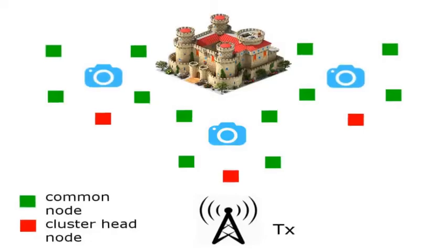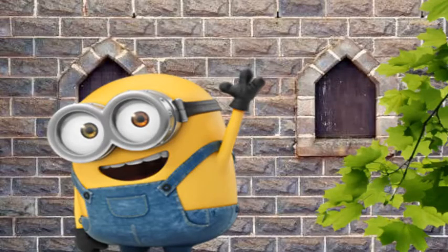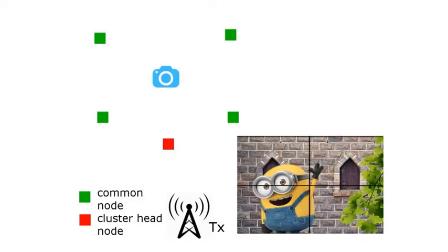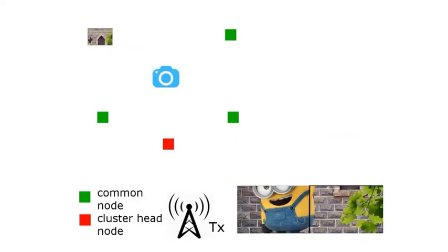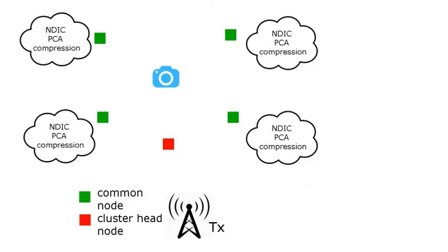Let's focus on one camera node which captures an image of the enemy. To reduce its processing load, the camera node splits the image into blocks and sends one block to each of the common nodes in the cluster to which it belongs. The common nodes compress the block images and send them to their cluster head node which sends them to the transmitting station.